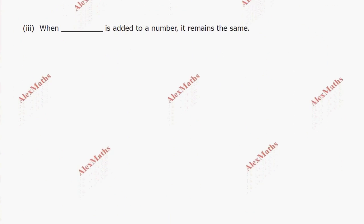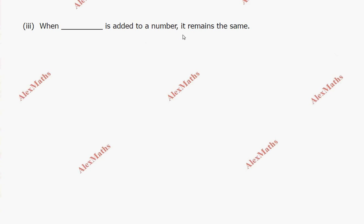Subdivision 3: when zero is added to a number, it remains the same. Subdivision 4: division by zero is not defined.